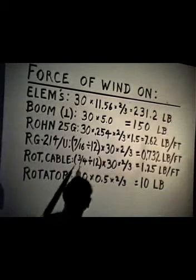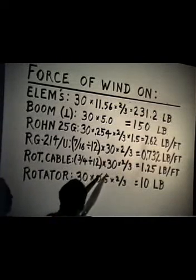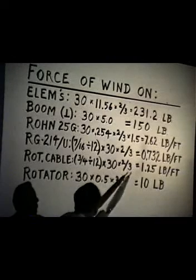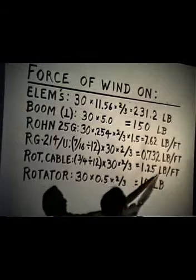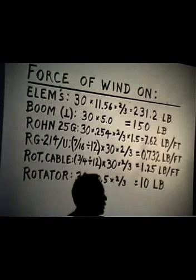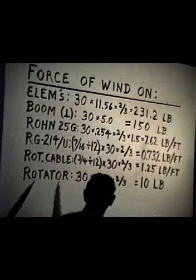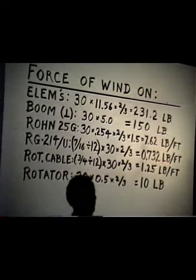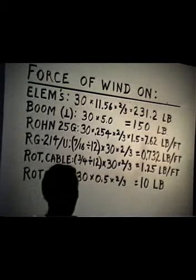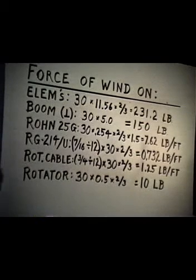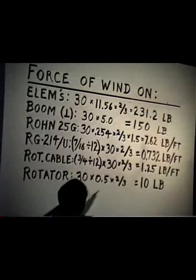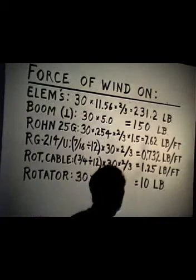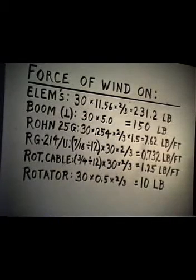The rotator cable is 3/4 inch diameter, divided by 12, times 30 pounds per square foot, again times the two-thirds rounding factor. He gets 1.25 pounds per foot of wind loading on the rotator cable. The rotator itself — I assume it has about a half a square foot of area, which would be typical for a rotator of the size he would be using — gives 10 pounds of wind loading on that rotator.